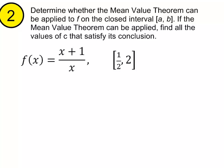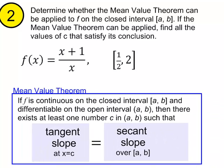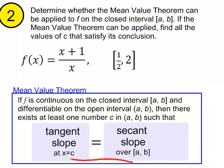Here we are to determine whether the MVT can be applied to F on the closed interval. And if the MVT can be applied, let's find all the values of C that satisfy its conclusion. What does that mean, satisfy its conclusion? Well, this is the conclusion of the MVT, that there's at least one point where the tangent slope equals the secant slope. So we need to find all the x values, or C values if you will, that satisfy the tangent slope equaling the secant slope.